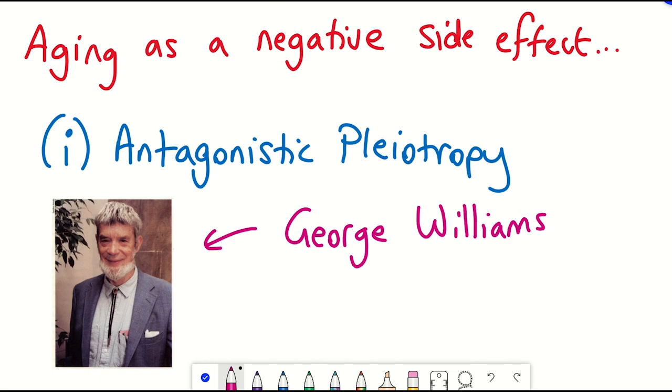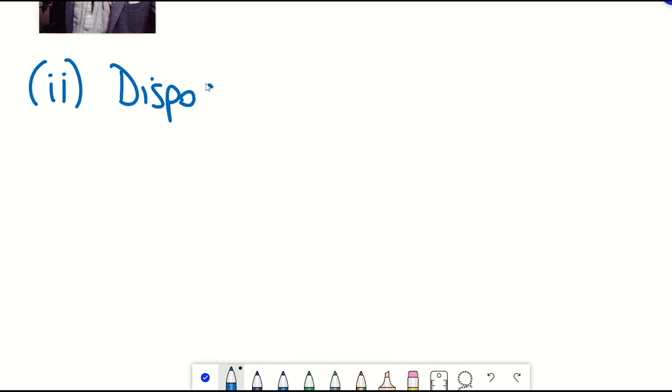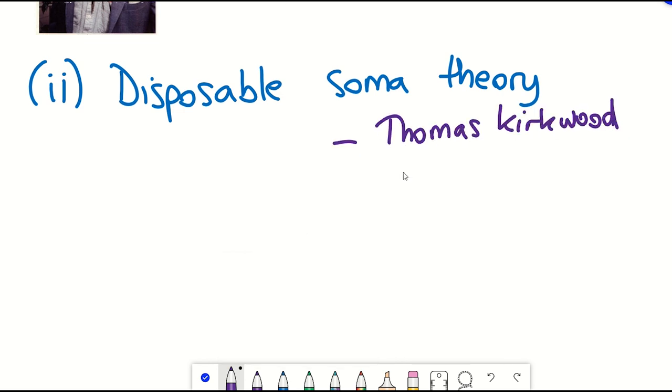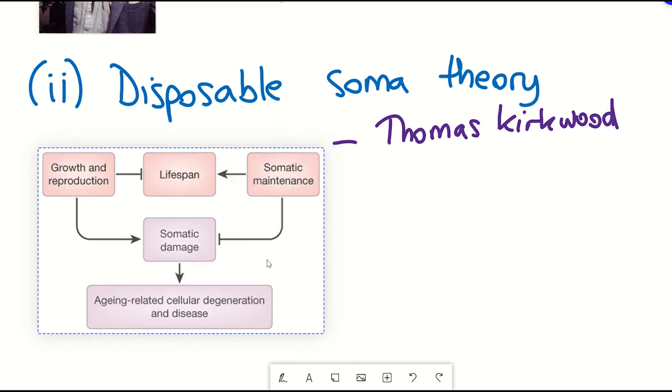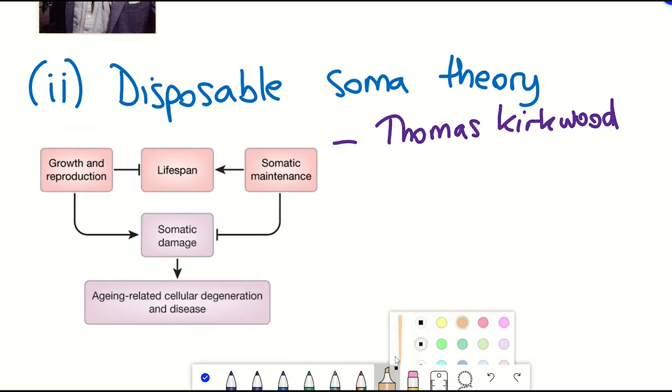In a similar vein, a second theory is the disposable soma theory proposed by the biologist Thomas Kirkwood. Kirkwood suggests that organisms have limited resources to allocate to either maintenance and repair processes or to reproduction. So according to his theory, natural selection would favor a strategy where resources are primarily directed towards reproduction during early life stages, while the maintenance and repair of the body are allocated secondary importance.